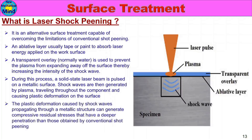The plastic deformation caused by shock waves propagating through a metallic structure can generate compressive residual stress that has deeper penetration than those obtained by conventional shot peening. Compared to normal shot peening or water jet peening, laser shot peening increases the compressive residual stress to a greater depth, improving the fatigue life of the part.